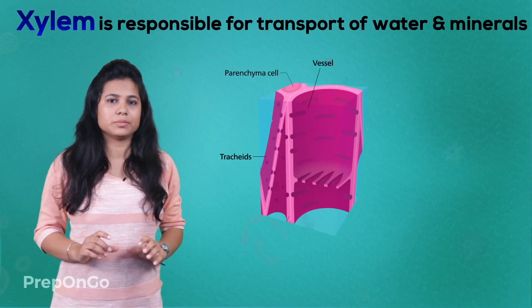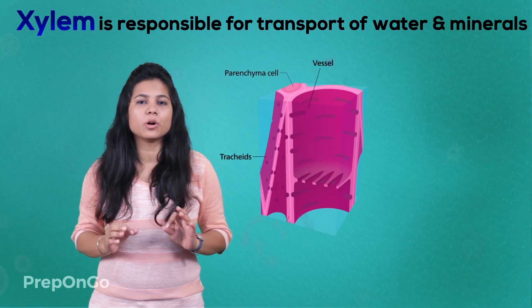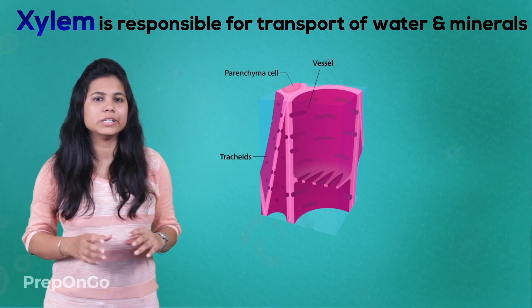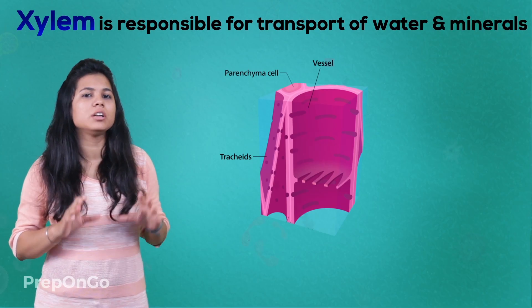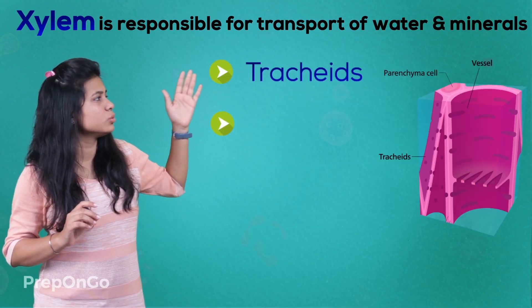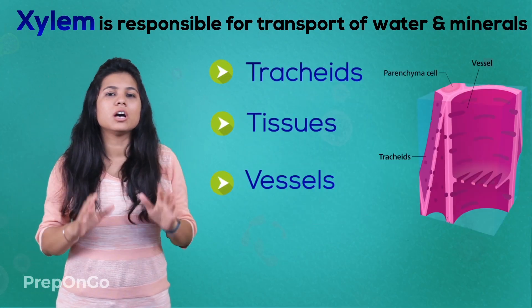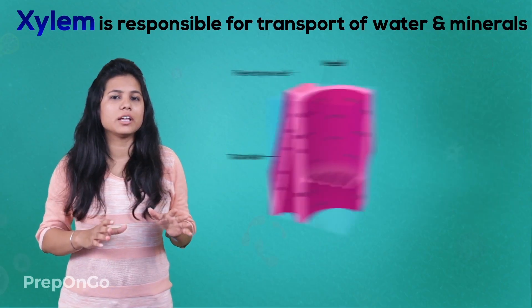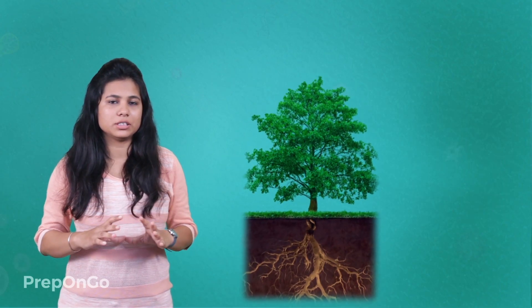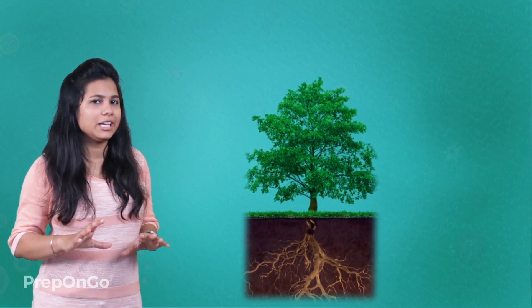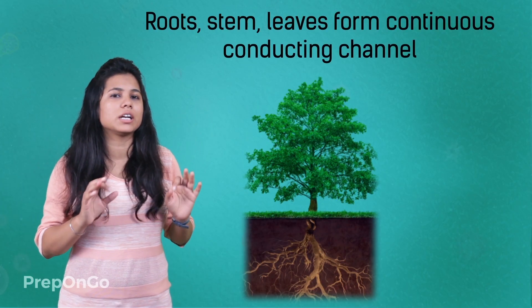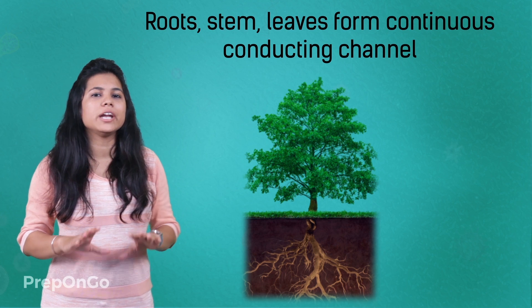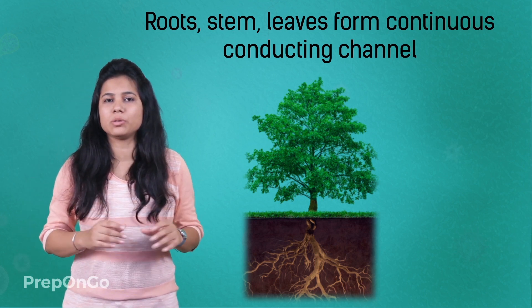Let's talk about xylem first. The xylem is responsible for transport of water, and this is done by its special cells — tracheids, tissues, and vessels — with the help of a conducting system. The root, leaves, and stem form an interconnected continuous conducting channel which provides water to every part of the plant.